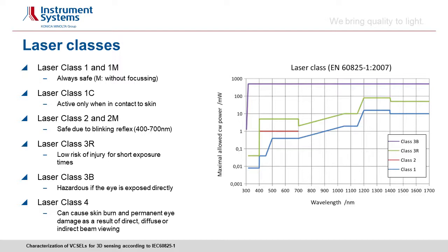There is a special case for visible lasers — they may also be laser class 2, which takes into account that you will see the laser beam as soon as it enters the eye. You will notice a flash and react with a blinking reflex, closing your eyes. Since we are talking about 3D sensing applications that mostly operate in the NIR region, our lasers must be laser class 1.